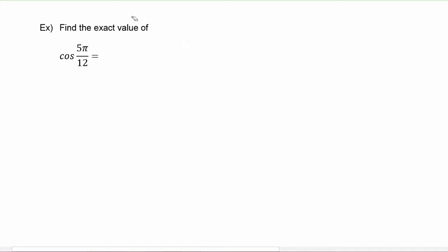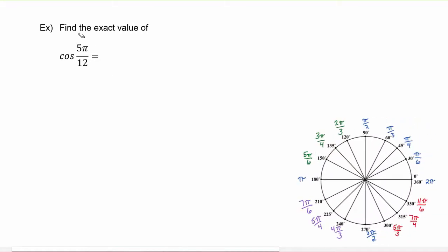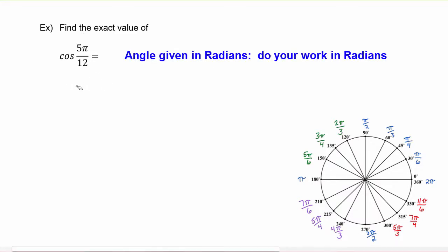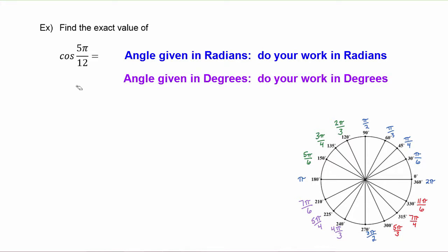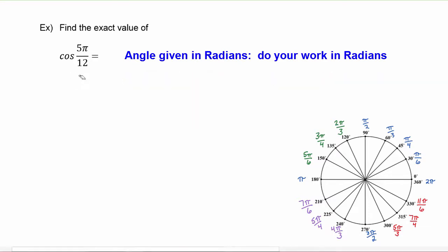Let's see how this identity will be used. In this example we have to find the exact value of the cosine of 5π over 12. You'll spot right away that 5π/12 is not one of the special angles, so we'll want to find a combination of special angles that will give us 5π/12. Since the angle is given in radian measure, we're going to stay in radians and figure out the combination of angles we need.